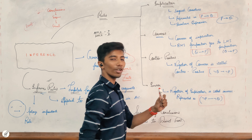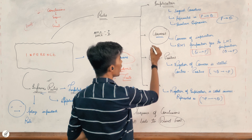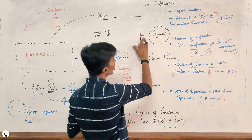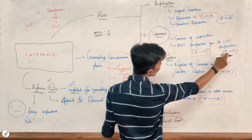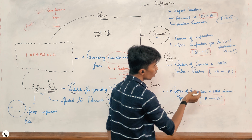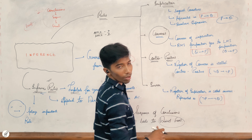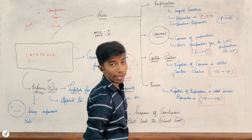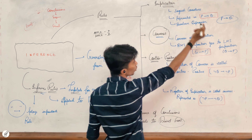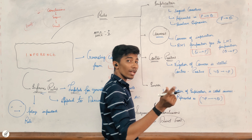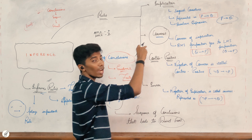Now we have to talk about Contra Positive. What you have done is Converse. If you apply Converse and then negation, we call it Contra Positive. P implies Q — if I have negation of Q implies negation of P, you call it Contra Positive. First you take the implication P implies Q, then apply Converse to get Q implies P, then apply negation to get Contra Positive.